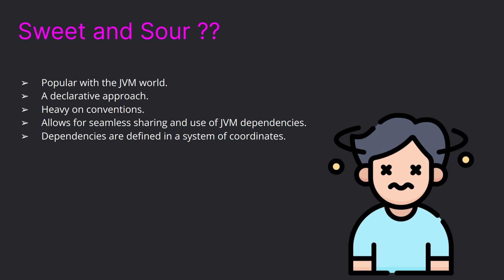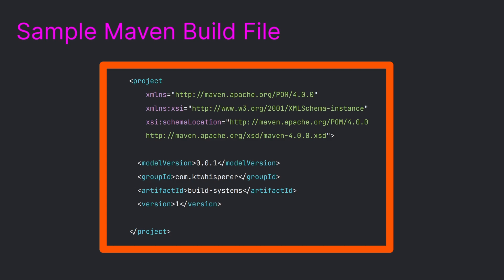Maven allows for seamless sharing and use of JVM dependencies — one of its primary functionalities still in use today. Dependencies are defined using a system of coordinates that includes the group ID, artifact ID, and version. This is an example of how a Maven build file looks: it has a project definition which defines different namespaces, schema locations, the model version, the group ID, the artifact ID, and the version of the specific project.